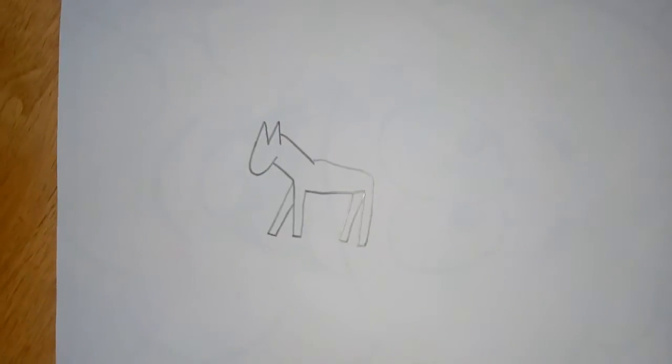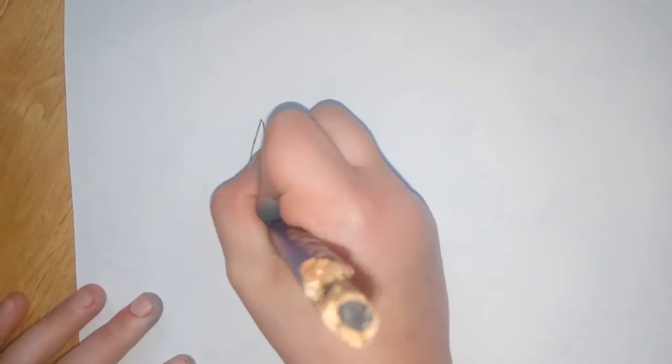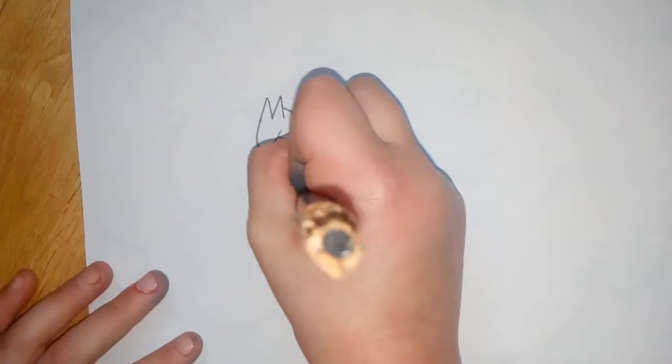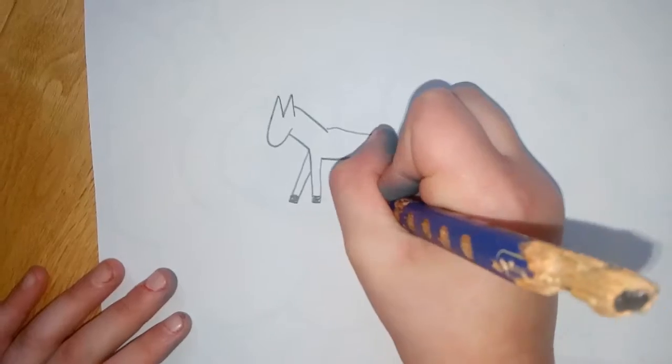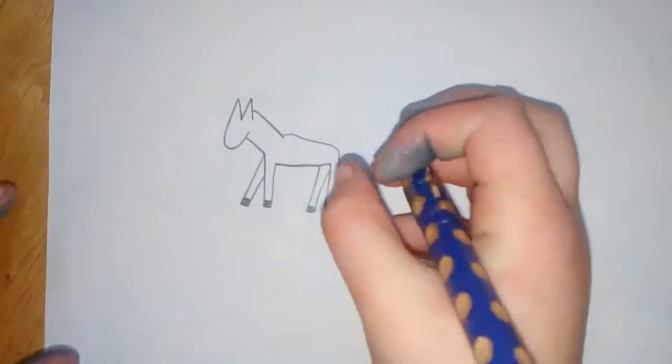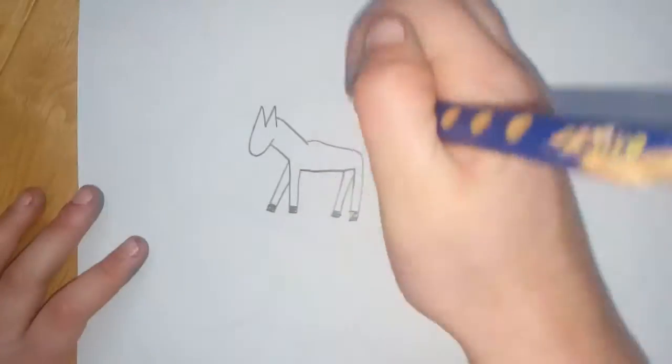Now we're going to do the hooves, so just do four blocks on the end of their legs. And now we're going to do the tail.